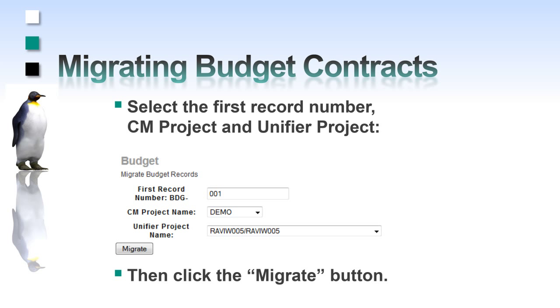I enter the migration configuration: first the record number, then the PCM project, and then the Unifier project. Then I click the migrate button.